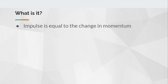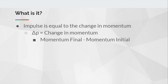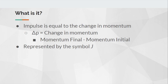In case you forget what change in momentum is, it's going to be abbreviated by a triangle, or we call that a delta, so it says delta P. Delta P is just the change in momentum, which really just means momentum final minus momentum initial. Impulse is going to be represented by the symbol J — that is the symbol for impulse, not the units.